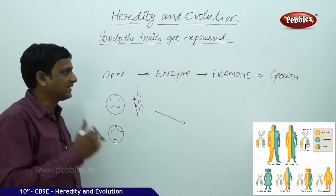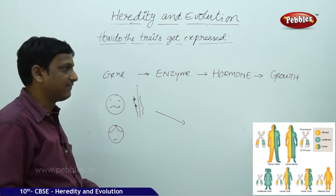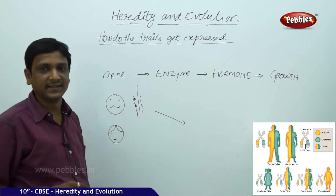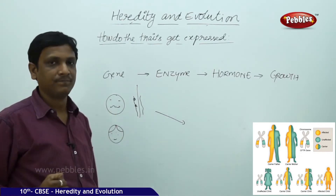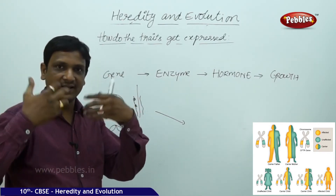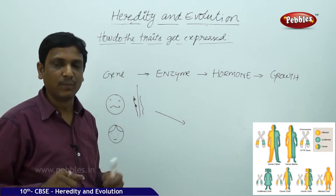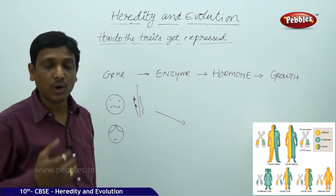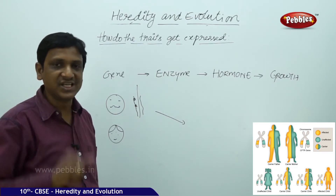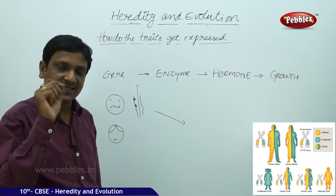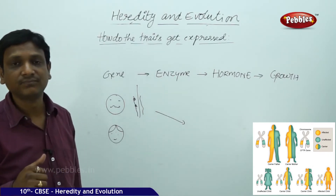Now let us see how the changes are executed. Say, for example, a character is inherited — the character being that the boy should grow tall. So the genes have carried that trait to the boy. Now the boy has to grow. How is this executed? The instruction for tallness is there in his genes.